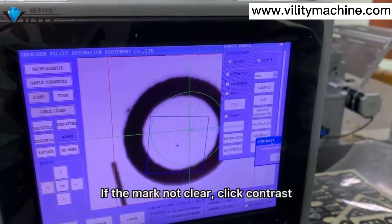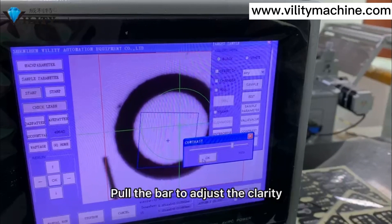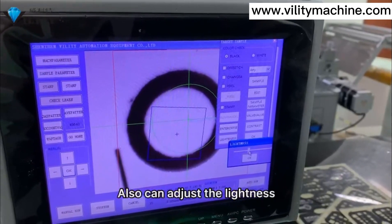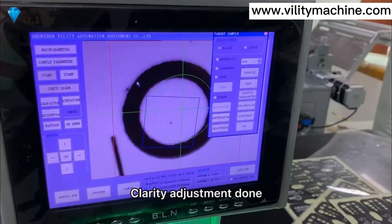If the mark is not clear, click contrast and pull the bar to adjust the clarity. You can also adjust the lightness. Clarity adjustment done.